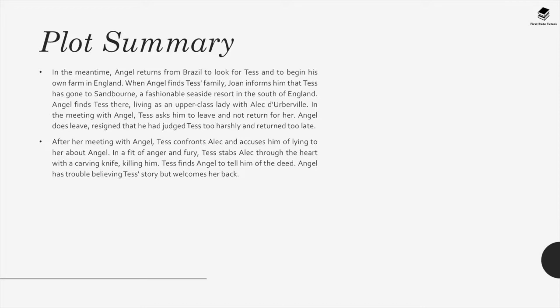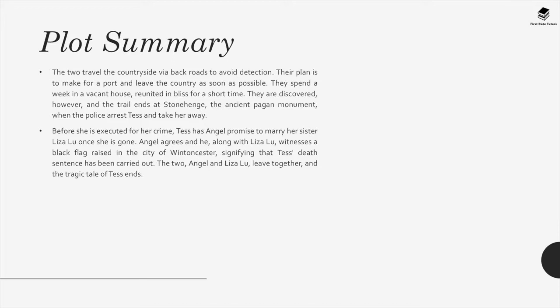Tess finds Angel to tell him of the deed. Angel has trouble believing her story but welcomes her back. The two travel the countryside via back roads to avoid detection, planning to reach a port and leave the country. They spend a week in a vacant house, reunited in bliss for a short time. They are discovered, however, and the trail ends at Stonehenge, the ancient pagan monument, when police arrest Tess. Before her execution, Tess has Angel promise to marry her sister Liza-Lu. Angel and Liza-Lu witness a black flag raised over the city of Wintoncester, signifying that Tess's death sentence has been carried out.